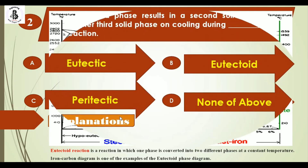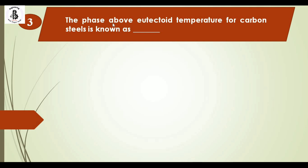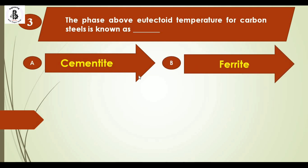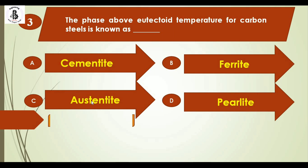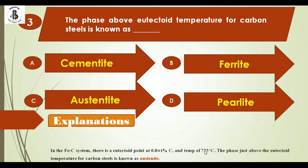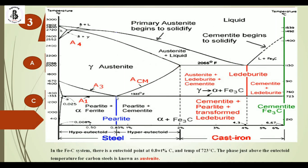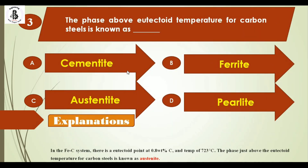Question 3: The phase above eutectoid temperature for carbon steel is known as — Option A: cementite, Option B: ferrite, Option C: austenite, Option D: pearlite. As per the iron-carbon diagram, at the eutectoid point (0.8% carbon, 723°C), just above the eutectoid point it is the formation of the austenite phase. The right answer is option C: austenite.